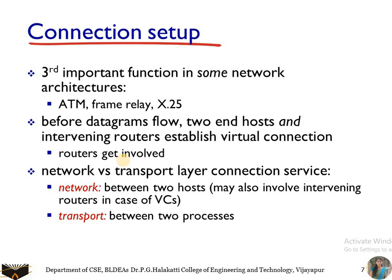Networks versus transport layer connection services: the network layer provides service between two hosts — host-to-host or source-to-destination delivery of the packet. Whereas the transport layer provides a connection between two processes — process-to-process delivery, also called end-to-end delivery. The transport layer works process-to-process, while the network layer works between hosts.